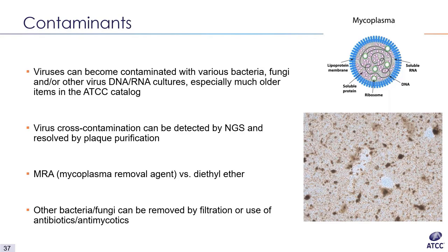Some viruses, such as influenza and rotaviruses, are dependent on trypsin — a protease that breaks down proteins. As a component of the VGM, trypsin can act as a proteolytic cleavage agent for virus proteins to allow for successful attachment to the host cells. The last major growth issue MSET virology takes into consideration is contaminants. Viruses can become contaminated with various bacteria, fungi, or other virus DNA and RNA, especially older items in the ATCC catalog. Virus cross-contamination can be detected by NGS and resolved by plaque purification. The most common contaminant MSET virology deals with is mycoplasma, which can be removed by either mycoplasma removal agent (MRA) for enveloped viruses, or diethyl ether for non-enveloped viruses, which destroys mycoplasma's lipid bilayers.